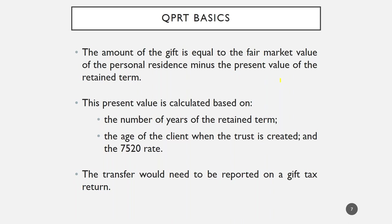If you make a gift in 2018, you'll have to file a gift tax return by April 15, 2019, unless you file for an extension to October 2019. When the gift tax return is filed, you'll want to demonstrate how you calculated the value of the present interest and the remainder interest using the IRS tables and calculations. To provide full and adequate disclosure, you'll probably need at least a broker opinion letter, if not a full appraisal, for the value of the property being contributed to the QPRT.